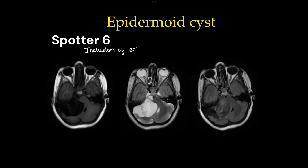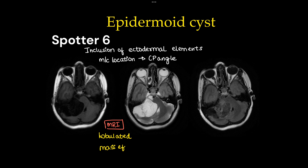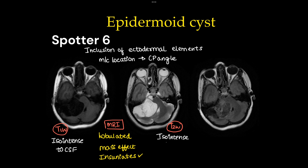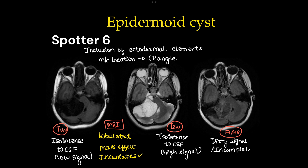Spotter 6 is a case of epidermoid cyst, occurring due to inclusion of ectodermal elements. The most common location is the CP angle, which is also the location in our case. MRI T1, T2, and FLAIR images show a lobulated lesion with mass effect that can insinuate between cisterns. On T1 it shows iso-intensity to CSF (hypointense); on T2 it is iso-intense to CSF (high signal). On FLAIR images it shows incomplete suppression of signal — a 'dirty signal' — which is the differentiating point between epidermoid cyst and arachnoid cyst.